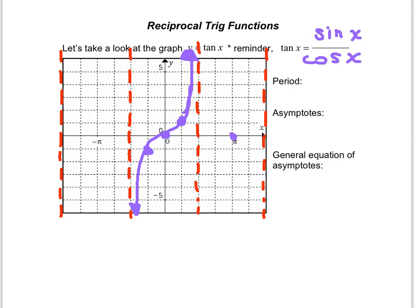If I'm at pi, tangent is 0. If I'm at 3 pi over 4, tangent is negative 1. If I'm at 5 pi over 4, tangent is 1. And so again, we get this nice repetitious pattern going here.